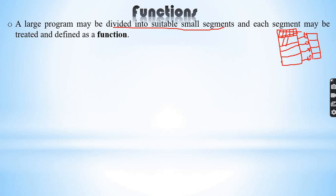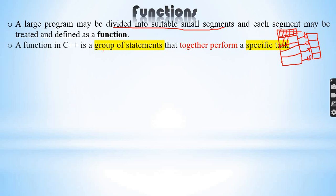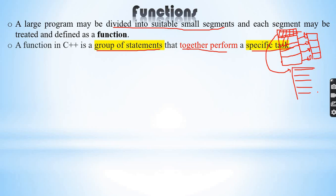A function in C++ is a group of statements that together perform a specific task. So, a function is a group of C++ statements — multiple statements together forming a sub-task. A set of C++ statements merged together to perform a specific task, enclosed in a block, is known as a function.